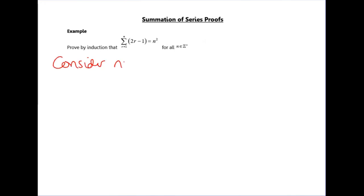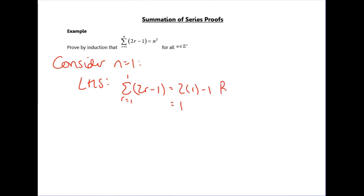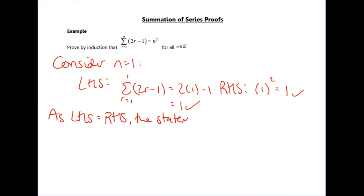For this first question we've been asked to prove by induction that this sum is equal to n squared. The first step is always to consider n equals 1. Substituting n equals 1 into the left hand side — the sum from r equals 1 to 1 of (2r − 1) — is just equivalent to subbing in r equals 1, and you get 1. On the right hand side, substituting n equals 1 gives n squared equals 1, so left hand side equals right hand side; the statement is true for n equals 1.